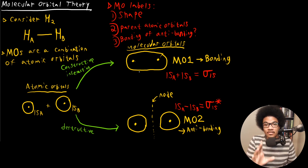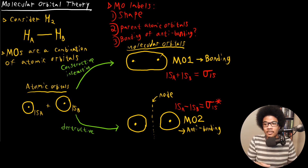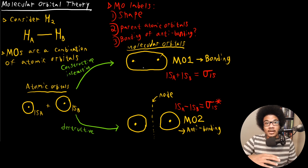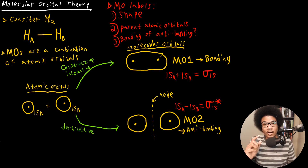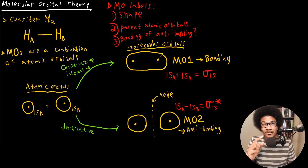So this is the general idea of molecular orbitals. They're composed of linear combinations of atomic orbitals and are delocalized throughout the molecular framework. We've gone over how to label these. In the next video, we're going to go into the energies of these different molecular orbitals and how they actually relate to bond strength.